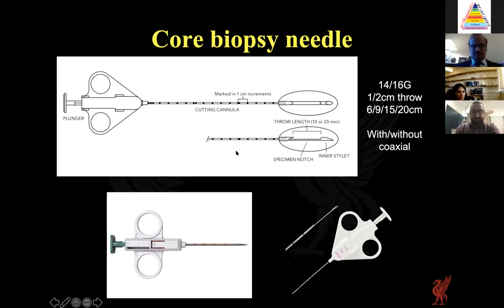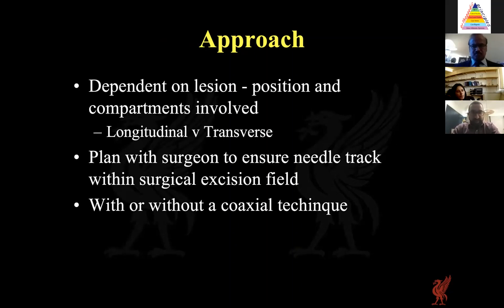Biopsies can be performed using a coaxial or non-coaxial technique; we tend to use 14 gauge most of the time with a two centimetre throw, though 16 gauge may occasionally be used — a 16 gauge is particularly good for very hard lesions as the smaller needle cuts through more easily. The actual approach must be planned with the surgeon, is dependent on the lesion and compartments involved, and involves a discussion on whether to go longitudinal or transverse. The main aim is to ensure you stay within the track that will be excised.